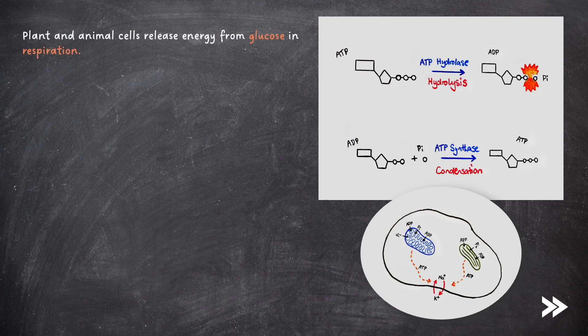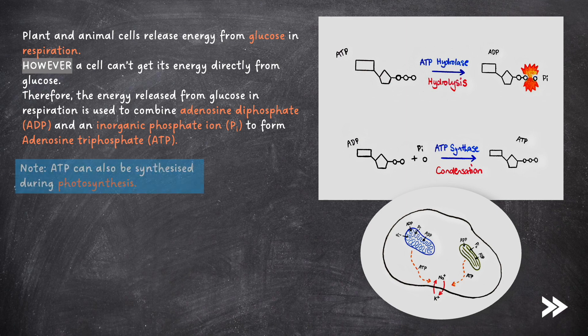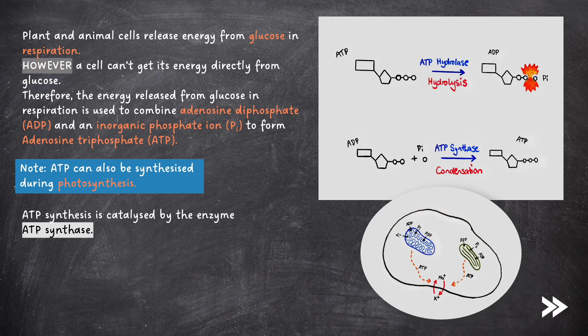Plant and animal cells release energy from glucose in respiration. However, a cell can't get its energy directly from glucose. Therefore, the energy released from glucose in respiration is used to combine adenosine diphosphate, ADP, and an inorganic phosphate ion, represented by Pi, to form adenosine triphosphate, ATP. Note that ATP can also be synthesized during photosynthesis. ATP synthesis is catalyzed by the enzyme ATP synthase.